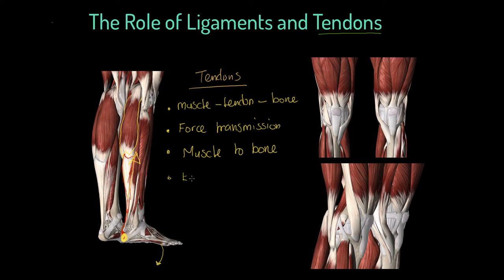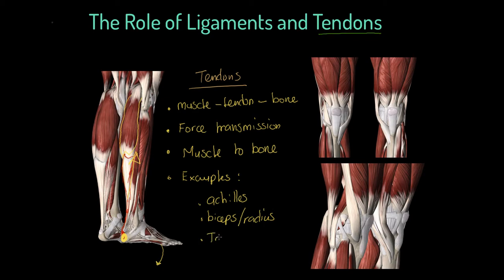Where would be examples of these tendons? They're on every skeletal muscle. But here are a couple of examples. We've got the Achilles tendon — that's the long tendon tissue I've just looked at. We also have tendons on the biceps; the insertion of the lower end of the bicep connects to the radius of the lower arm. We've also got the tricep muscle, which connects via a tendon to the ulna.